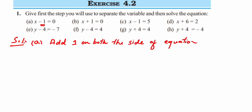Adding 1 on both sides: x minus 1 plus 1. We know that minus 1 plus 1 is 0, so x plus 0, which gives us x is equal to 1. That is the solution for part (a). Next, part (b): x plus 1 is equal to 0.